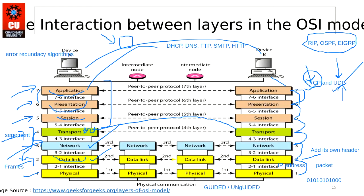These are the protocols and standards upon which the OSI model works. It is just a theoretical model provided by the ISO organization. That is how the functionality of the OSI model works.